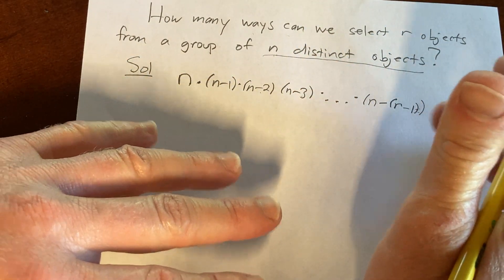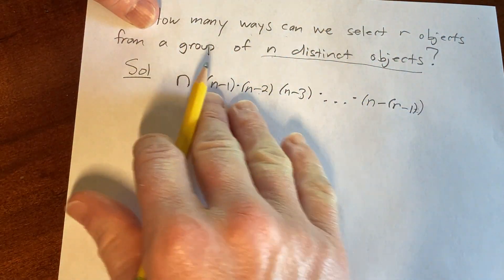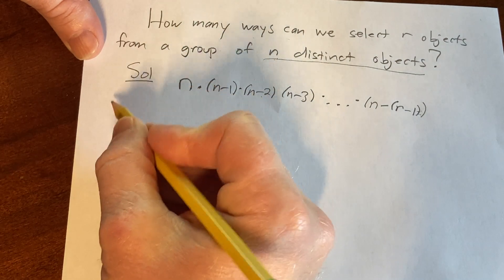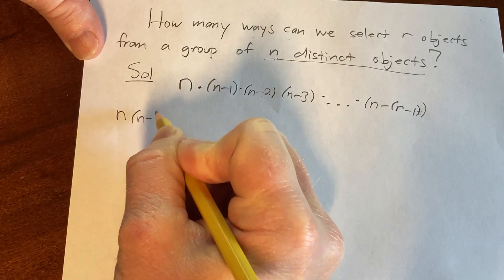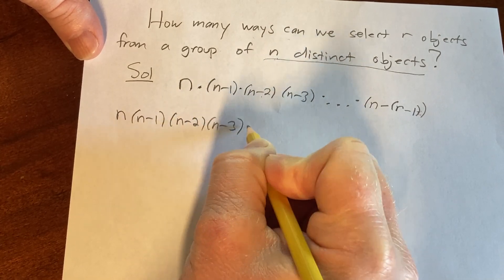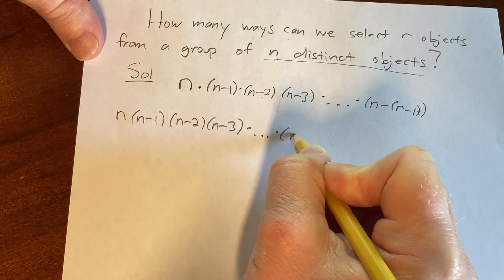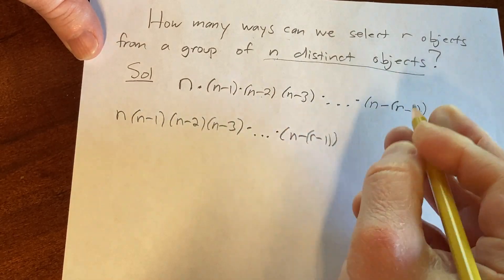So what you want to do is basically, you can call it completing the factorial. So I'm going to write this again down here so we have some more room. This is the cool part. So this is the same as n, n minus 1, n minus 2, n minus 3, times dot dot dot times n minus r minus 1. There's a parenthesis here.